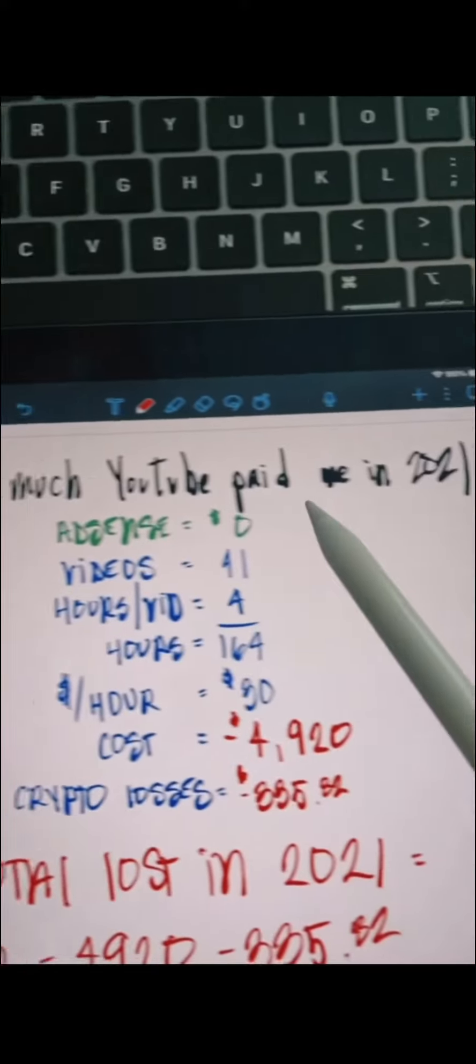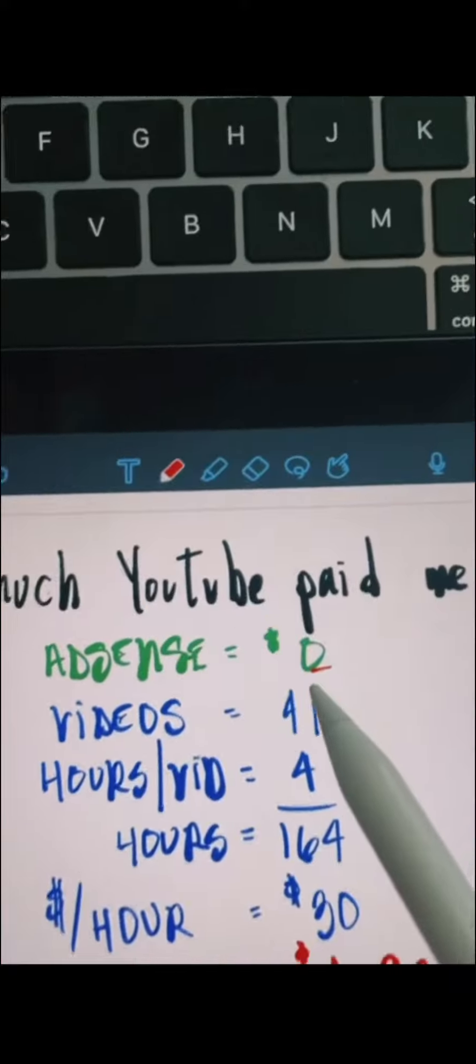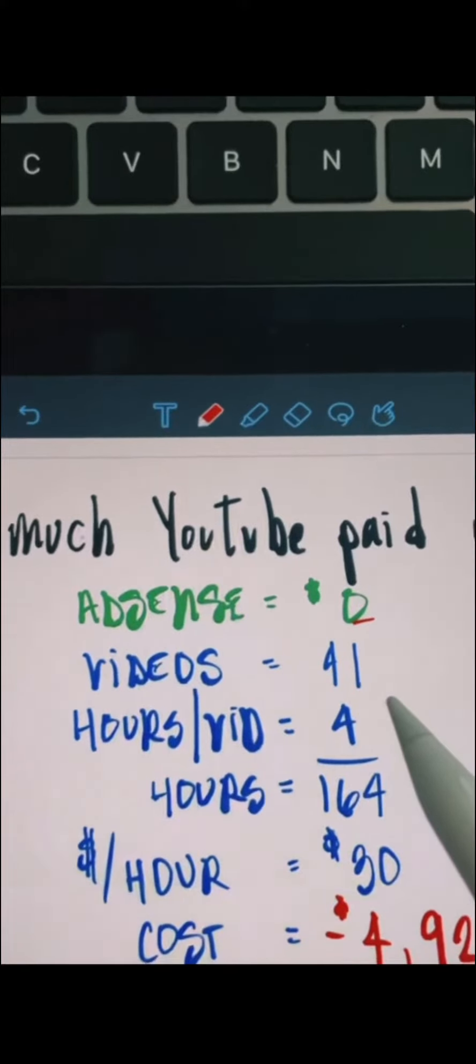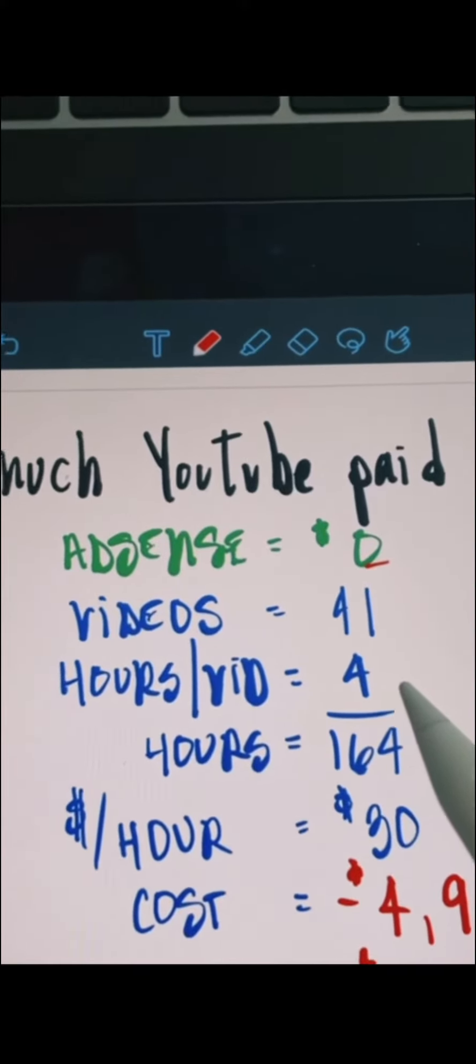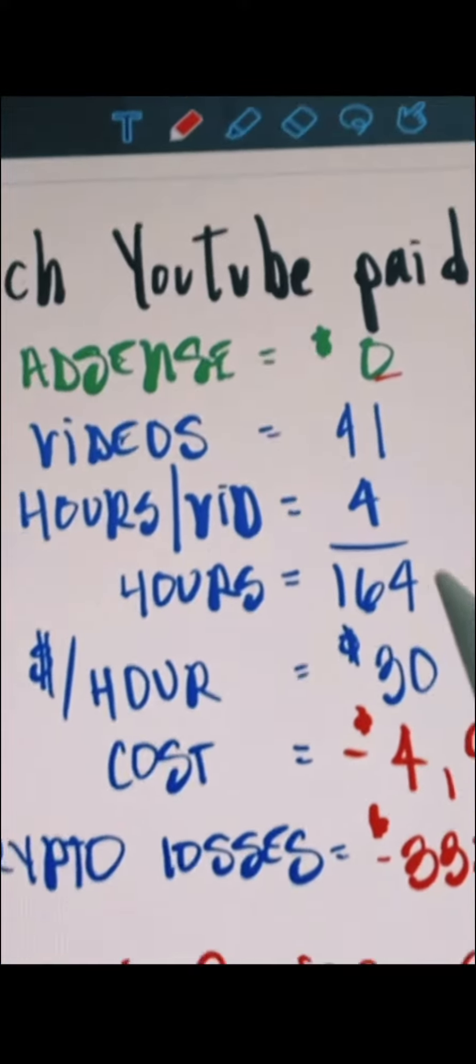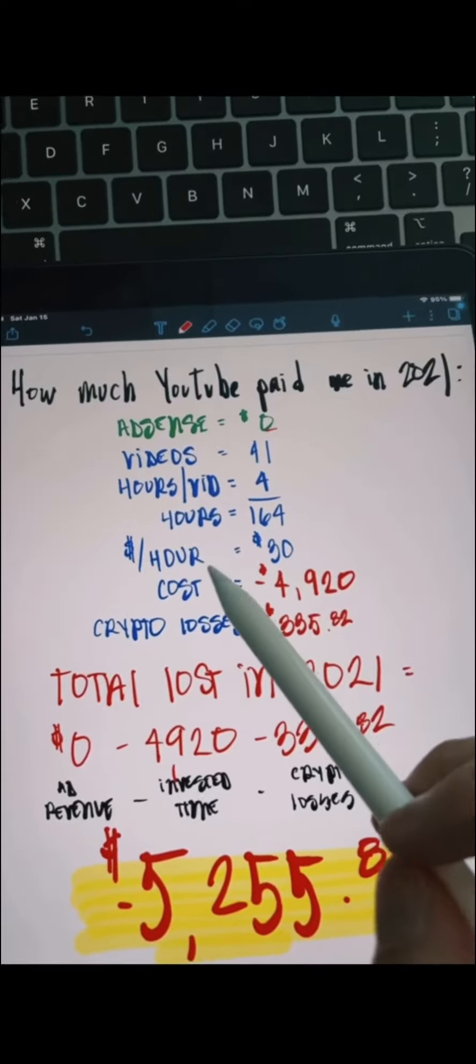Here's how much YouTube paid me in 2021. My AdSense revenue was zero. I posted 41 videos. I spent an average of four hours per video, for a total of 164 hours spent on YouTube content.